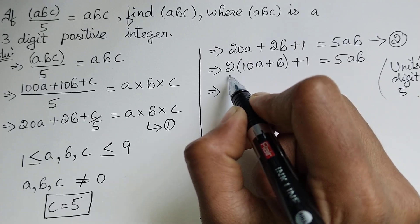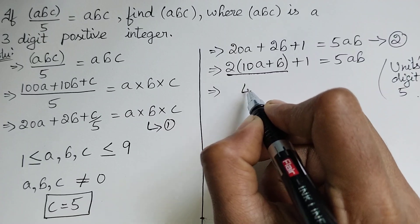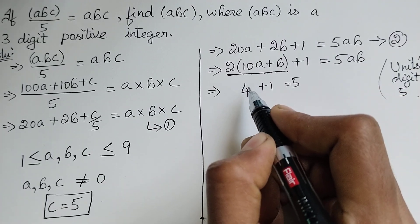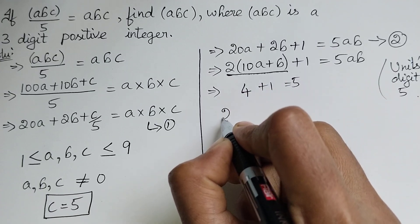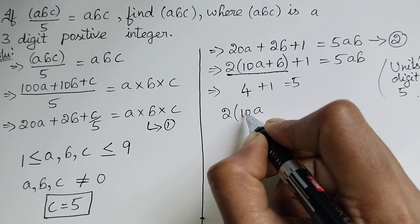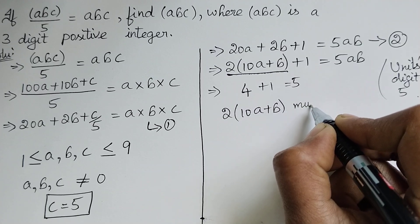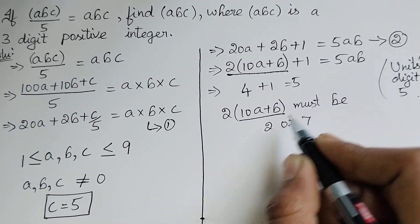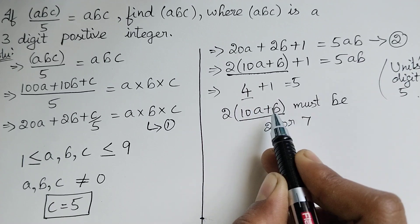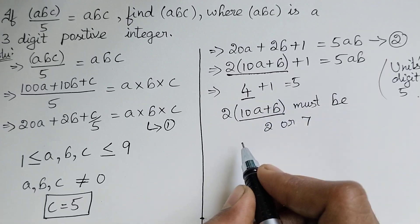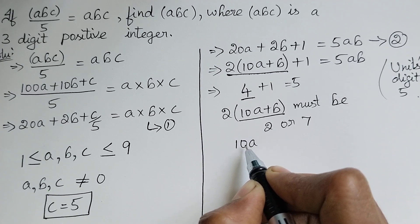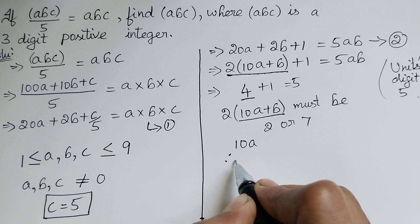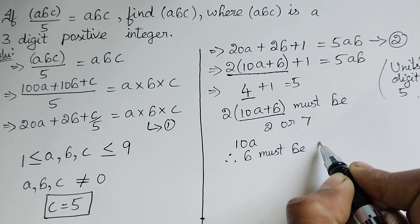Here we can see that the units digit of this term must be 4. Then only we can get 4 + 1 = 5. So going still deeper, the units digit of the term 10a + b must be 2 or 7, because 2×2 = 4 or 2×7 = 14, that is the unit digit is 4. Here 10a, the product of any number to 10 gives units digit 0. Therefore b must be 2 or 7.